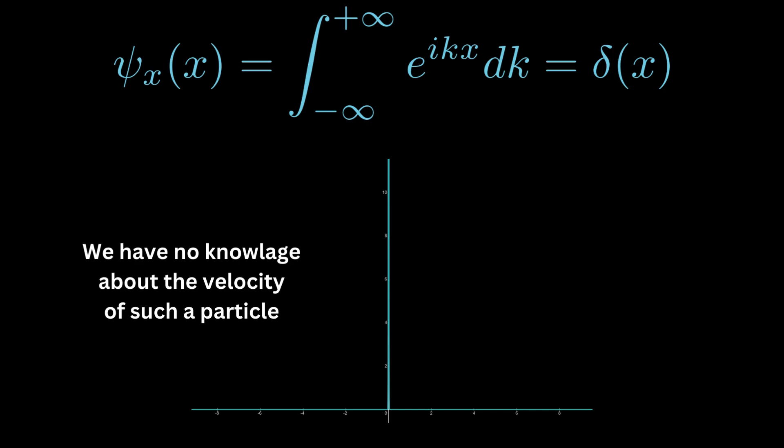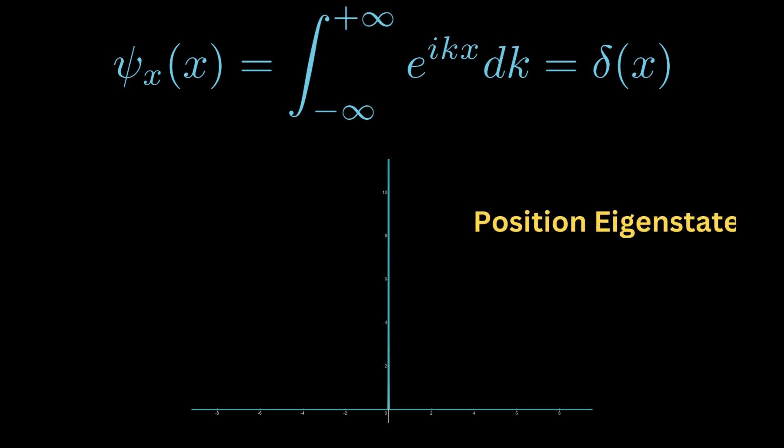However, we used infinite number of momentum eigenstates, and our ignorance of momentum became also infinite. The particle may now have any momentum, both in direction and value. We call this delta function a position eigenstate. It will be denoted by psi sub x of x. The lower index means that it's a position eigenstate, while x in the parentheses means that it's represented in the position space.